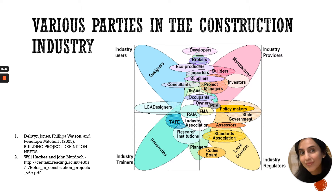If we look at the regulators, the government is the one who sets the acts, regulations, and policies. We have different levels of governments. We also have standards associations like Malaysian Standards, and we have local councils — all under regulators.